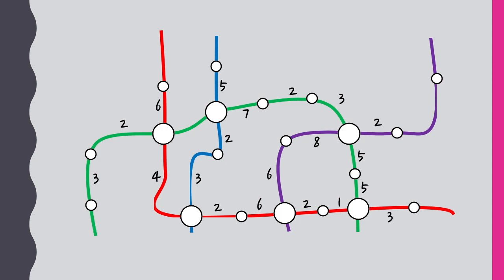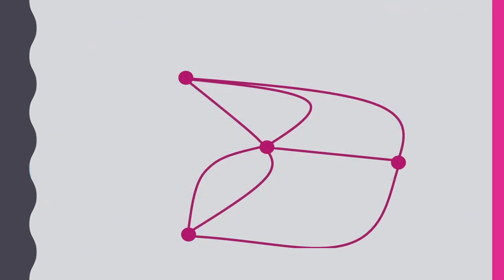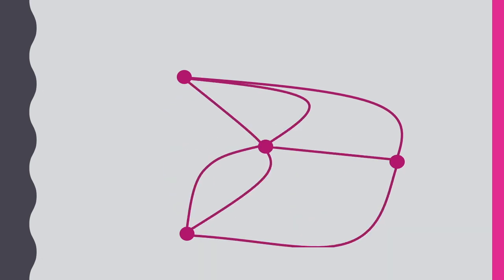Now, a key idea that makes graph theory very different from geometry is that often the actual position of a node or the length of an arc is meaningless. In solving the Königsberg problem, it doesn't matter whether we represent the bridges like this, or like this, or like this. All that matters is whether or not any two nodes are connected, and how many times they are connected.